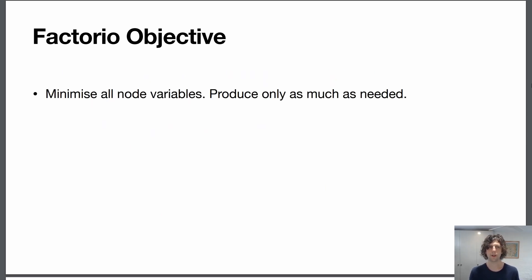Our objective function is that we want to minimize all node variables. So we only want to produce as much as needed and no more.